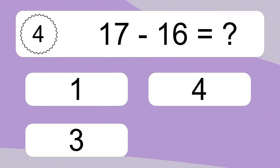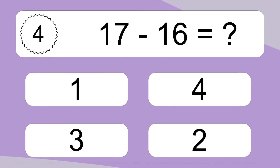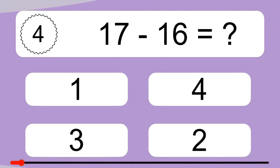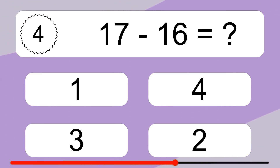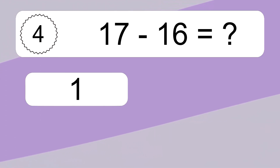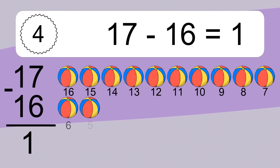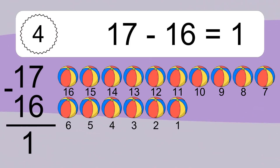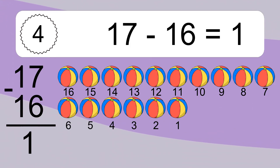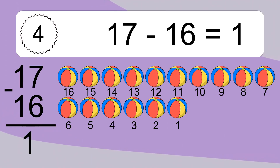17 minus 16 equals what? 17 minus 16 equals 1. Let's count it: 16, 15, 14, 13, 12, 11, 10, 9, 8, 7, 6, 5, 4, 3, 2, 1.